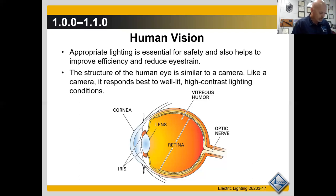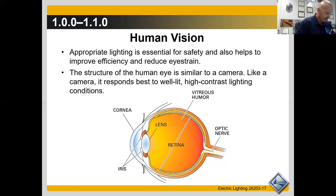Moving to section 1.2.0, characteristics of light. When discussing light, most people think of natural light from the sun or light emitted from a source such as an electric light bulb. This type is called incident light. Another type is called reflected light.